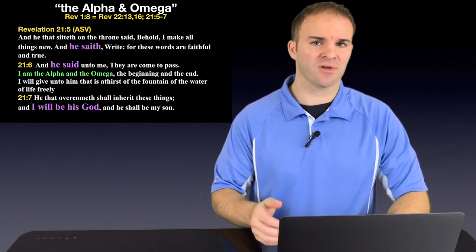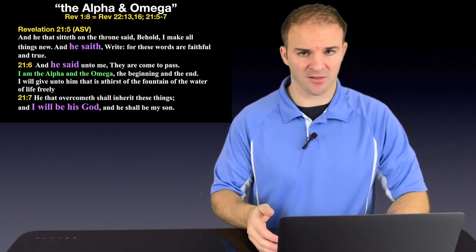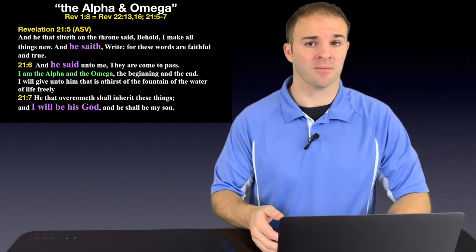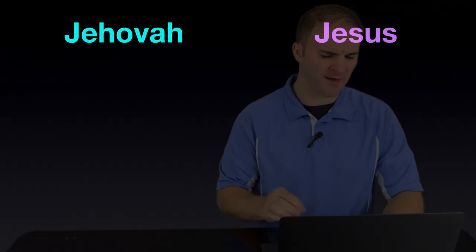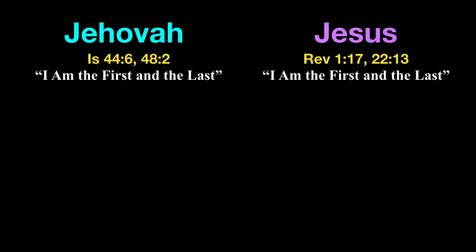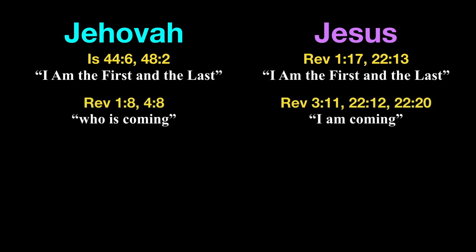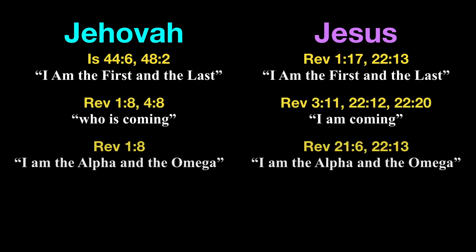This is no different than when Thomas declared to Jesus, my Lord and my God, my Kyrios and my Theos. When you finally line up all these statements beside each other that come right out of the New World Translation for Jehovah and Jesus, over and over again, the exact same descriptions for each are used.